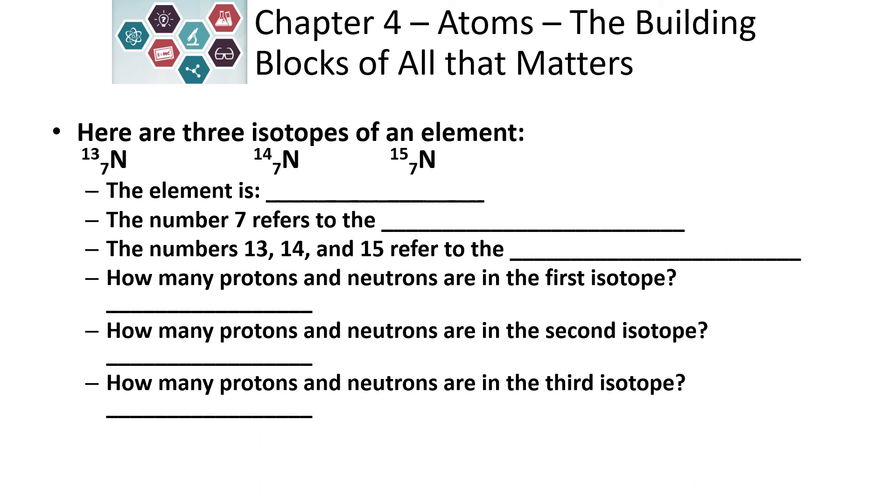Here are three isotopes of an element. Which element is this? See if you can fill out this form. Pause the video and fill out the form. This is nitrogen. The number seven refers to the number of protons or the atomic number. 13, 14, and 15 are the mass number. How many protons and neutrons are in the first isotope? Well, that would be the mass number, which is 13. How many protons and neutrons are in the second isotope? That would be 14. And in the third, there would be 15.